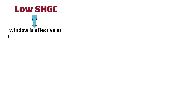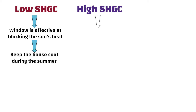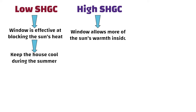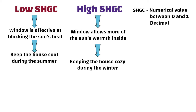A low solar heat gain coefficient indicates that the window is effective at blocking the sun's heat, helping to keep the house cool during the summer. A high solar heat gain coefficient indicates that the window allows more of the sun's warmth inside, contributing to keeping the house cozy during the winter. The solar heat gain coefficient is a numerical value between 0 and 1, always expressed as a decimal.